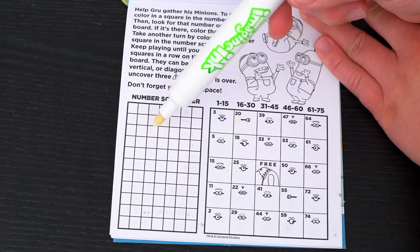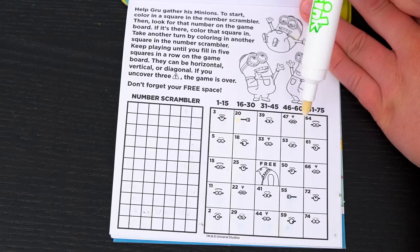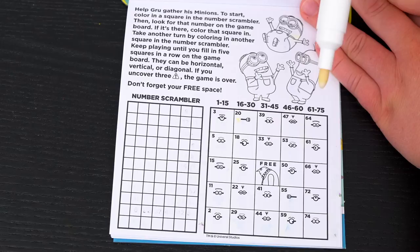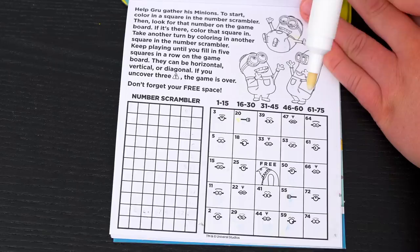Help Gru gather his Minions! To start, color in a square in the number scrambler! Then look for that number on the game board! If it's there, color that square in! Keep playing until you fill in five squares in a row on the game board! If you uncover three caution signs, the game is over! Alright! Let's play!